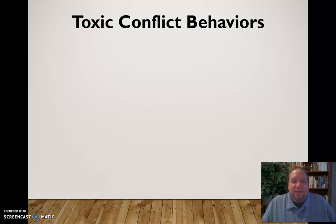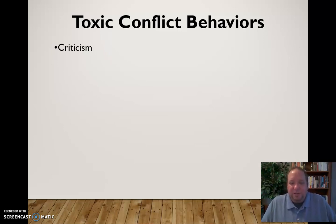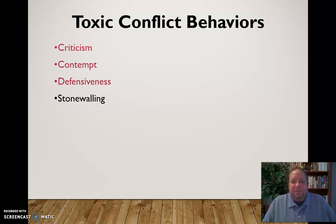Four toxic conflict behaviors — called the four horsemen of conflict — are criticism, contempt, defensiveness, and stonewalling. These are things you really want to avoid when engaging in conflict, as they are not productive or healthy and should be avoided at all costs.